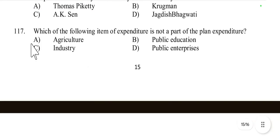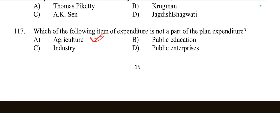Question 117: Which item of expenditure is not part of planned expenditure? Agriculture, industry, and public enterprises come under planned expenditure, but public education is not under planned expenditure — it is non-planned expenditure. Option B is correct.